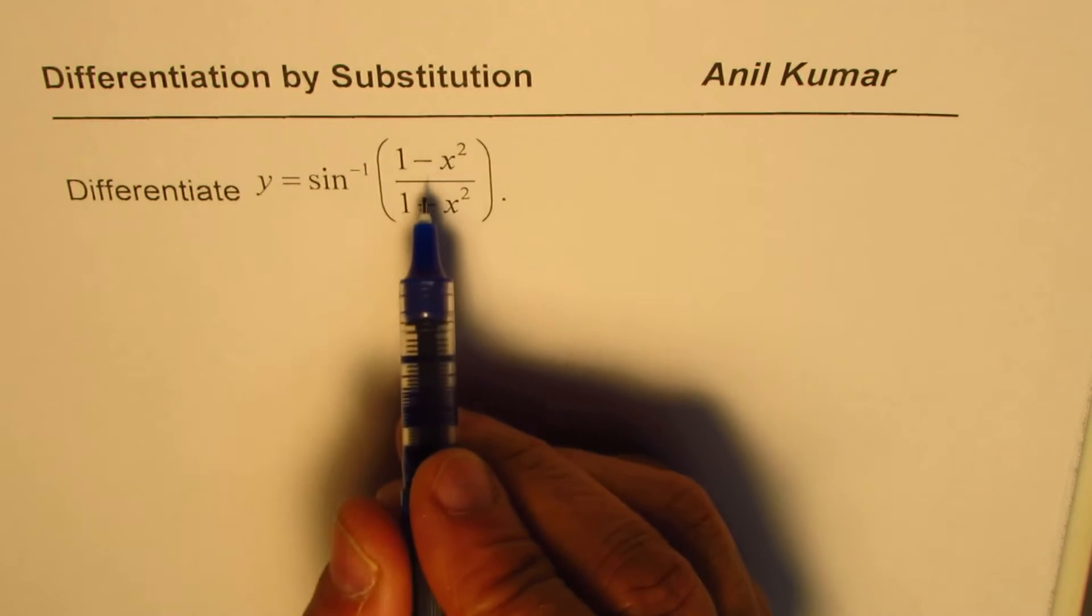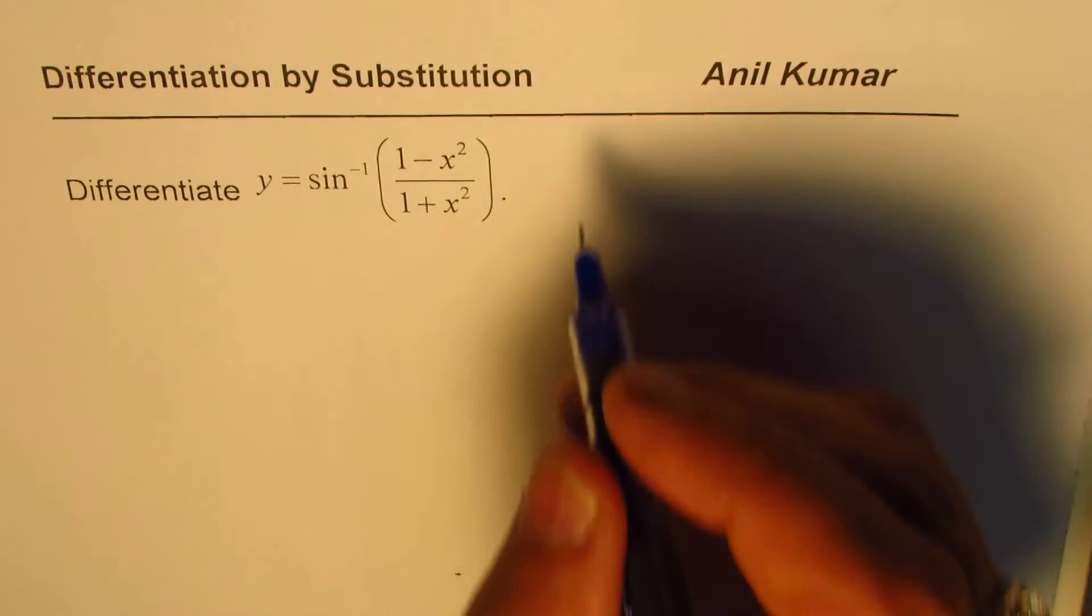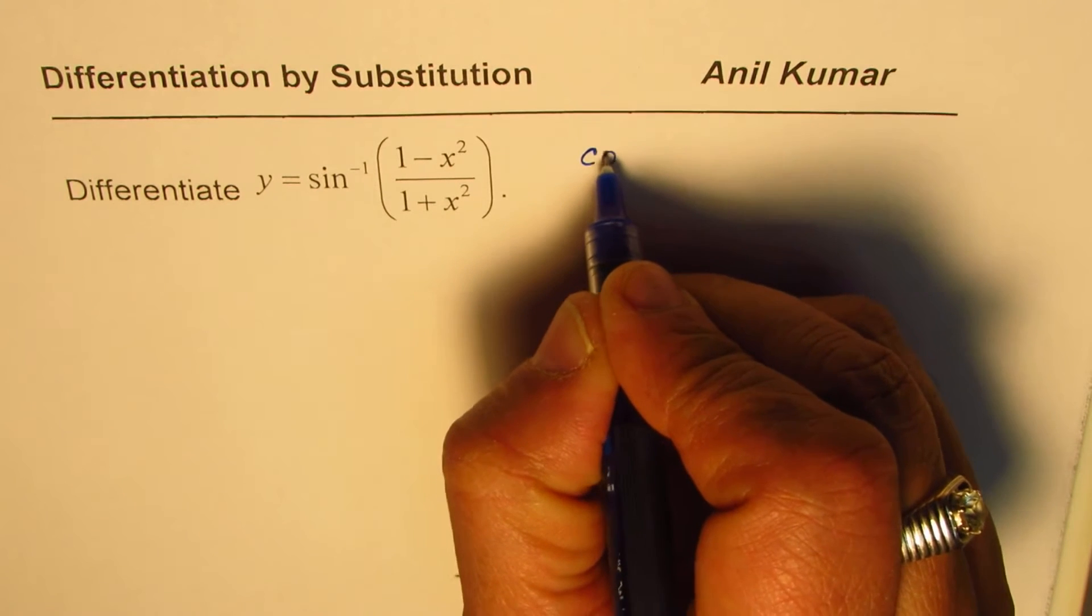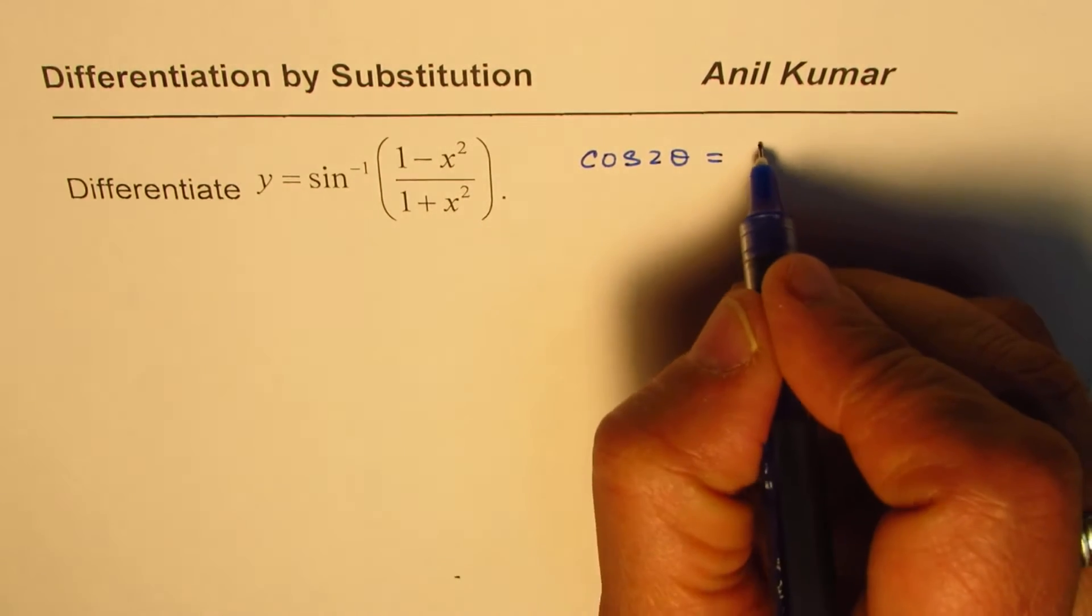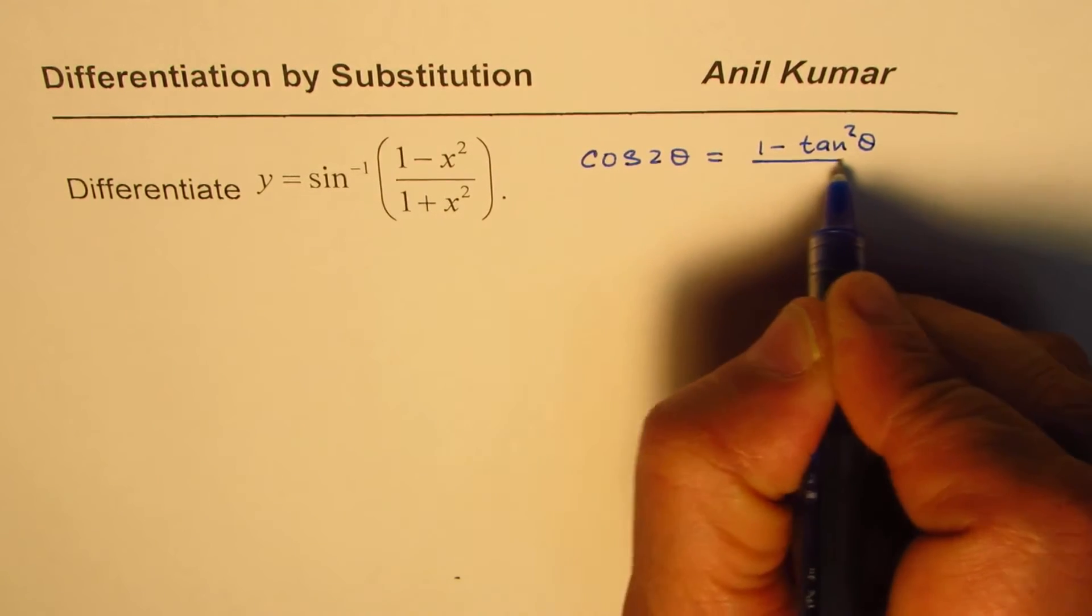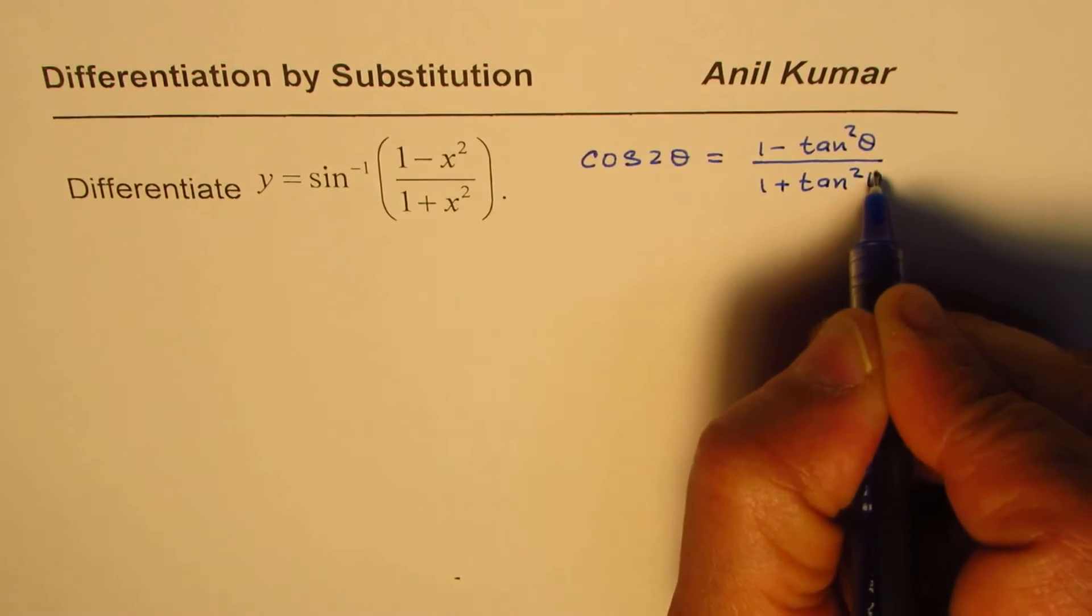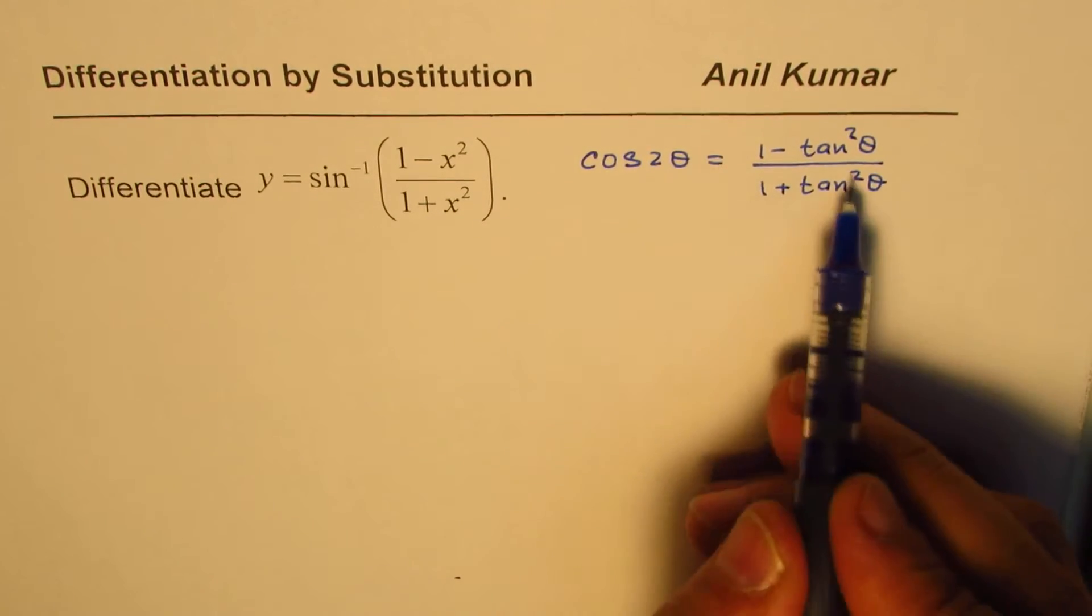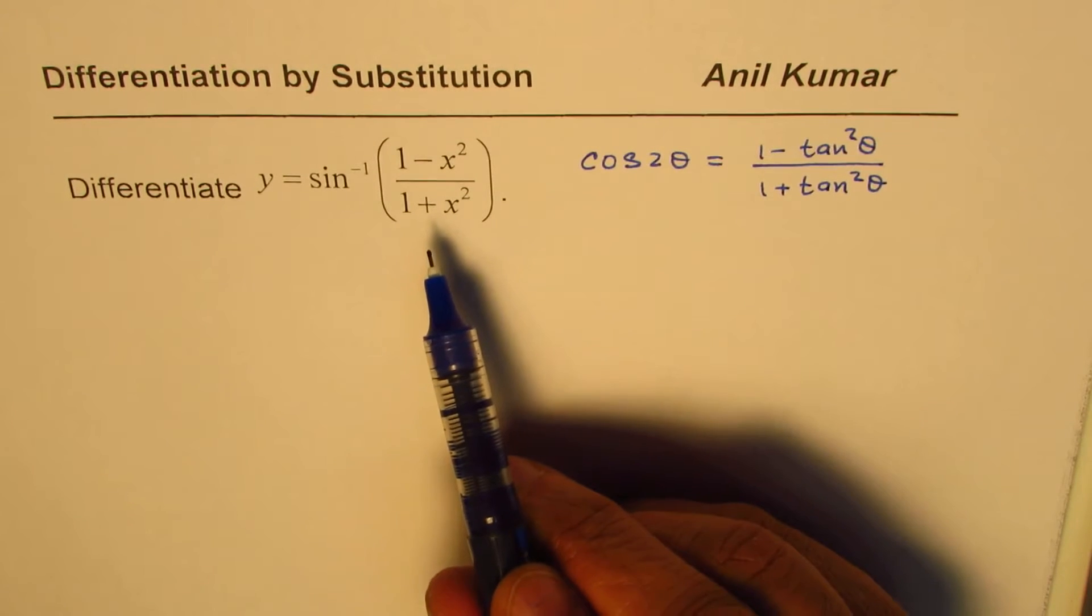In these kinds of questions, we need to substitute cos 2θ. Let me remind you of the trigonometric identity: cos 2θ equals (1 minus tan squared θ) divided by (1 plus tan squared θ). That's the kind of identity which can help us simplify this.